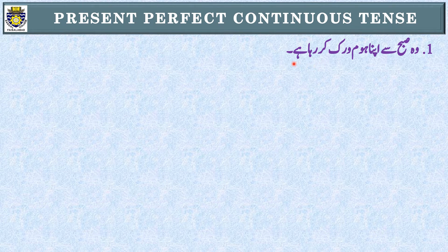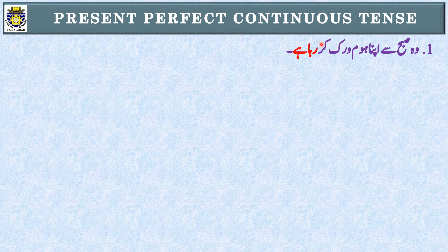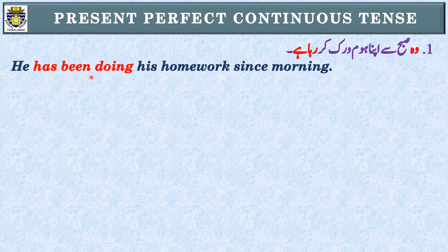Example 2: 'وہ صبح سے اپنا homework کرتا رہا ہے۔' First step: identification — 'رہا ہے' اور 'صبح سے' یعنی point of time — Present Perfect Continuous Tense۔ Second step: subject 'وہ' یعنی he — third person singular — has been۔ He has been doing his homework since morning.